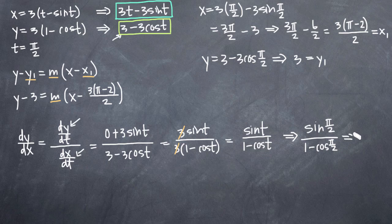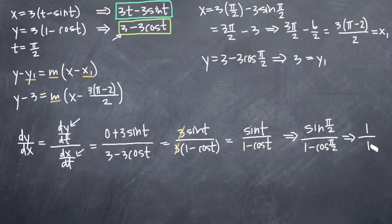We know that sine of pi over 2 equals 1, so we get 1 in the numerator. We know that cosine of pi over 2 equals 0, so 1 minus 0 gives us 1. So we have 1 over 1, and our slope m equals 1.